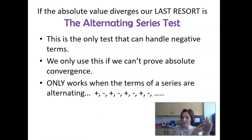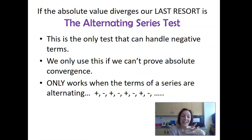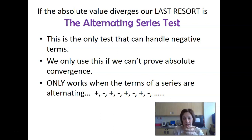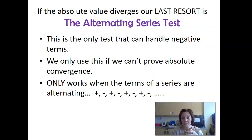We don't just say the series diverges. This is the last stop. If the series' absolute value doesn't converge, we still have one chance to test the series itself. This is the only test we have that can handle negative terms. But we're only going to use it if we've already tried to prove absolute convergence and that didn't work. So the first thing we're always going to do is go to the big rectangle and try to prove absolute convergence.